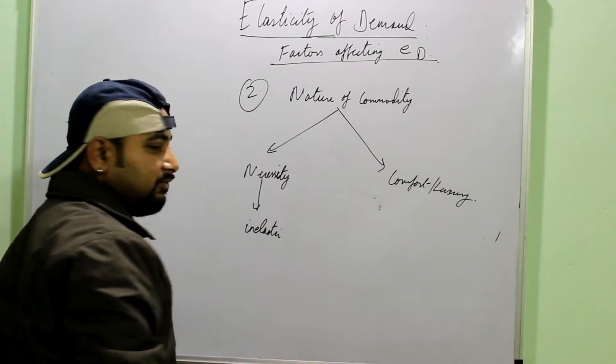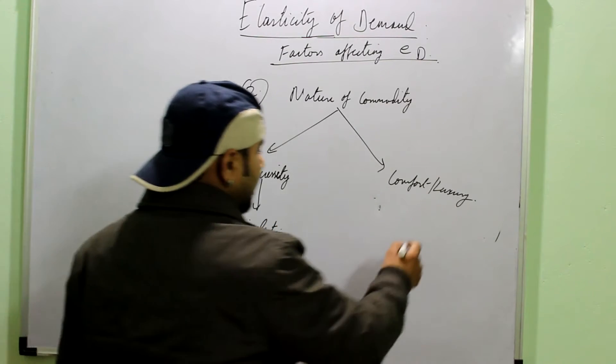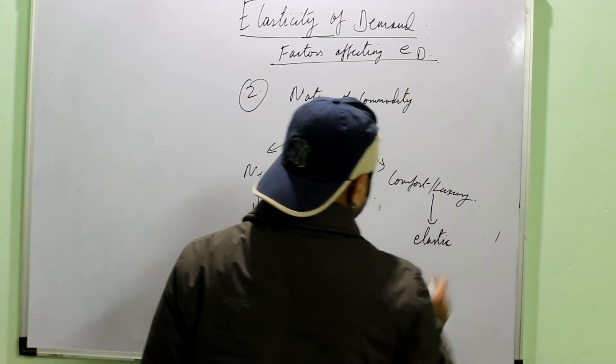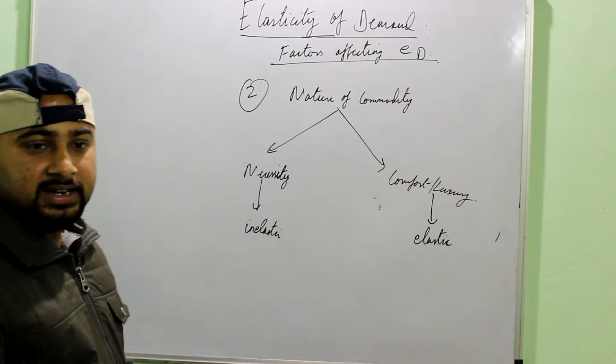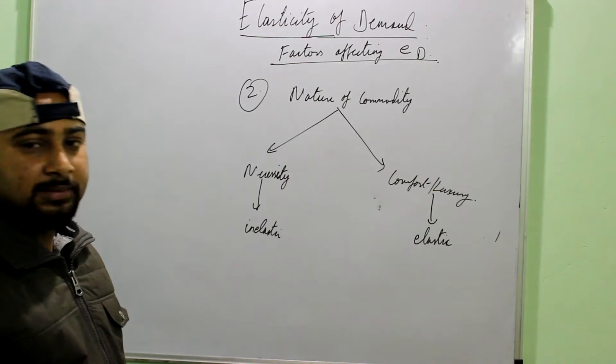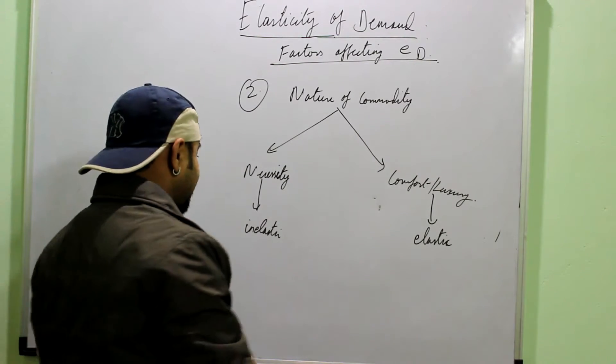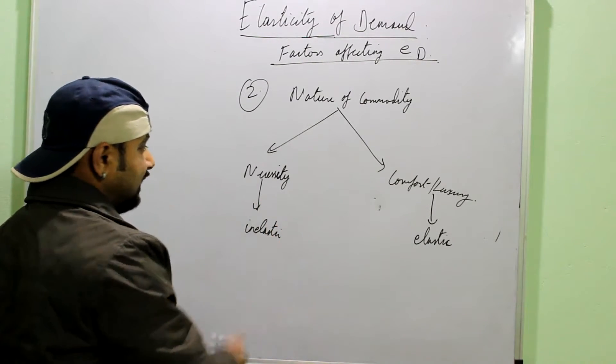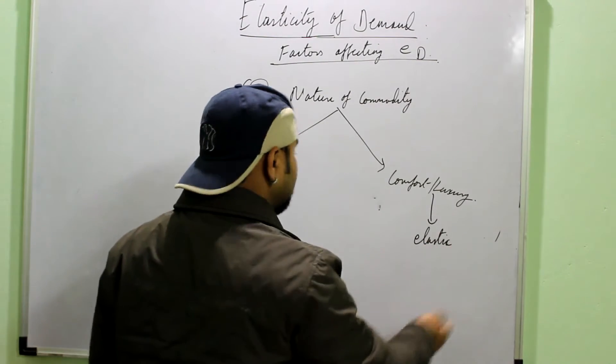Okay, then demand for the necessities is generally inelastic. Necessity referred to the basic need. Food, clothing and shelter. But demand for the comforts or the luxuries is elastic. You can wait for some time if they are becoming expensive. Like for again, you can take the example. For food grain, it will be inelastic. But for mobile phone, it can be elastic.